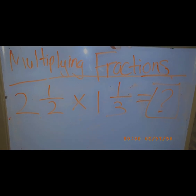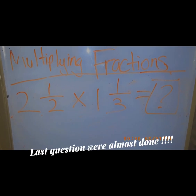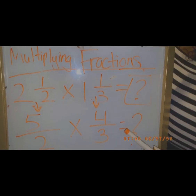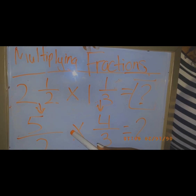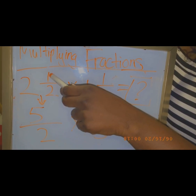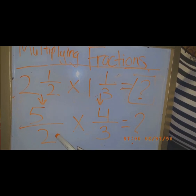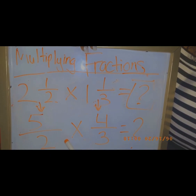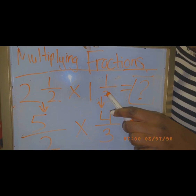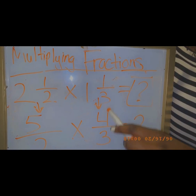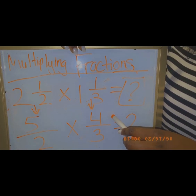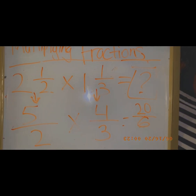Now we're going to do the last question: 2 and 1 over 2 times 1 and 1 over 3. We convert 2 and 1/2 by saying 2 times 2 is 4, plus 1 is 5, and we bring down the 2, so it's 5 over 2. For 1 and 1/3: 1 times 3 is 3, plus 1 is 4, and we bring down the 3, so it's 4 over 3. Then we multiply across to get 20 over 6.